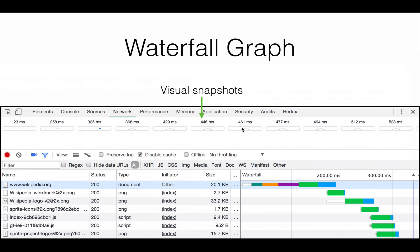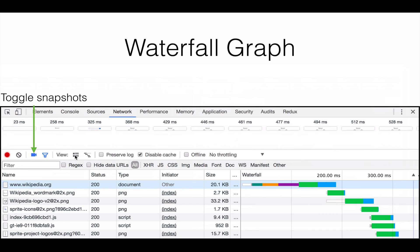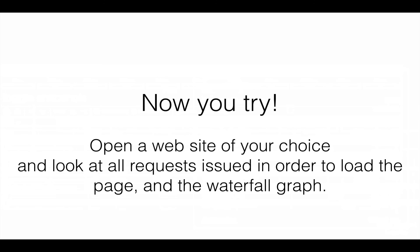At the top, sometimes you may see visual snapshots, which basically tell you what the page looked like at that point in time during loading. If you don't care to look at these visual snapshots, you can toggle that off by clicking on the video camera icon. Now you try — pause this video, open up a website of your choice, open up the network tab, reload it, and then look at all the requests that were issued in order to load the page and examine the waterfall graph.